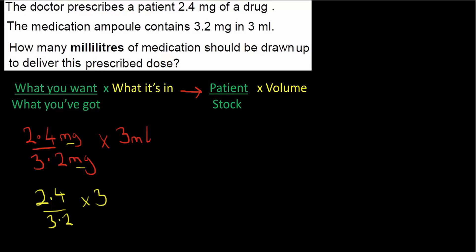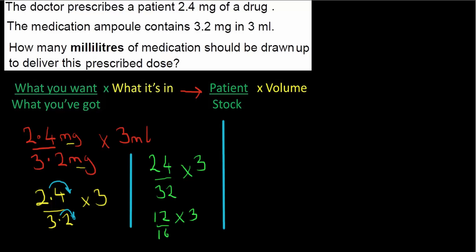Mathematically I need 2.4 over 3.2 times 3. Without a calculator this looks tricky as the fraction has decimals. I can multiply top and bottom by 10 to get an equivalent fraction without changing the value — this gives 24 over 32 times 3. Simplifying: halving gives 12 over 16, halving again gives 6 over 8, and halving once more gives 3 over 4, always keeping the times 3.